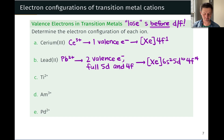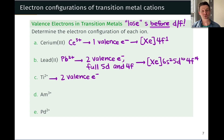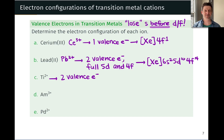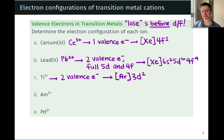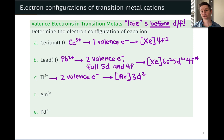Ti²⁺ — we looked at this one in detail. Ti²⁺ has two valence electrons remaining, both found in the 3D subshell, which is the valence D subshell for period 4. So the configuration is [Ar]3d².